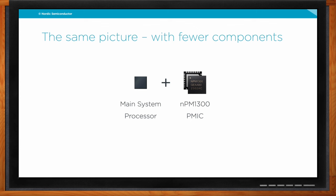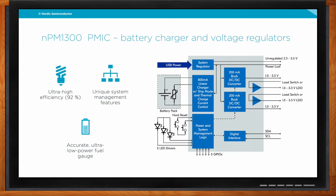The npm1300 is, in short, a battery charger and voltage regulator with many extra features. It includes ultra-high efficiency buck regulators — two buck regulators up to 92% efficient at regulating power — plus unique system management features like watchdogs, power brownout detection, and hardware reset functionality. It also provides the hardware hooks needed for ultra-low power fuel gauging that runs as an algorithm on your main system processor, whether MCU or SoC.